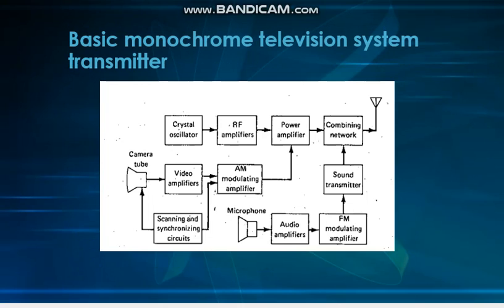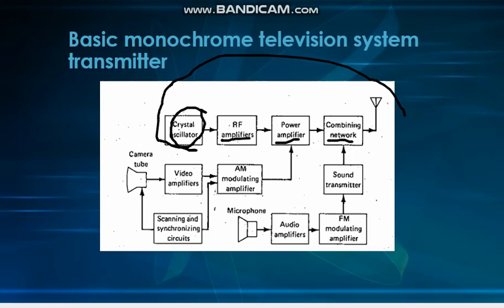Now we are heading towards the basic monochrome television system transmitter. As you can see from the block diagram, the basic part of the radio transmitter is quite similar here — the crystal oscillator, RF amplifiers, power amplifiers, and combining networks. This is the same basic structure you have learned in earlier lessons, but some external features have been added to make it a television system transmitter.